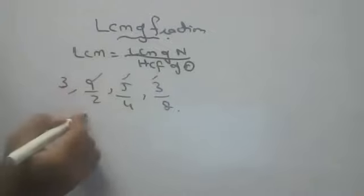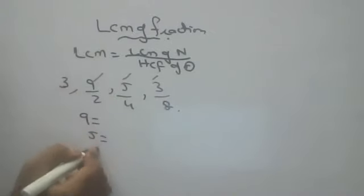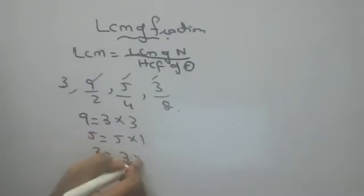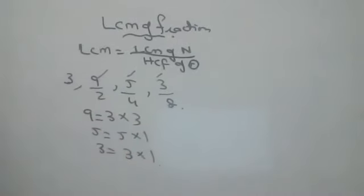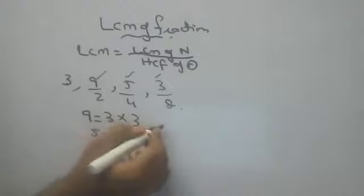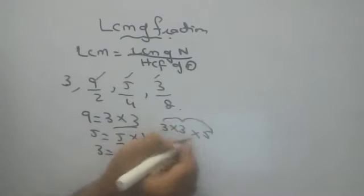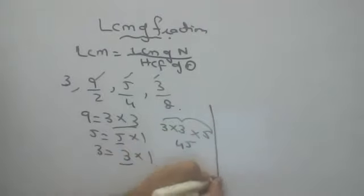So, LCM of numerators. What are the numerators? 9, 5 and 3. 9 is 3 into 3. 5 is 5 into 1. 3 is 3 into 1. So, here 3 is there. Here 3 is there. Both 3s, 2 threes you take. And 1 five. 3 times 3 is 9, 9 plus 4 is... wait, 45 is the LCM.